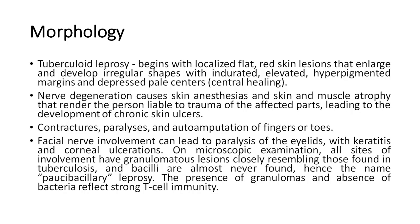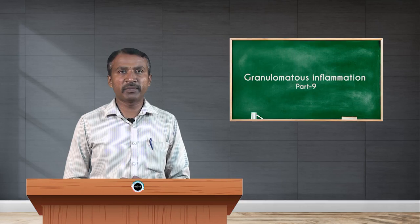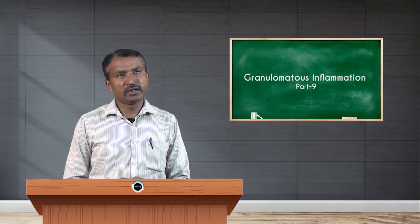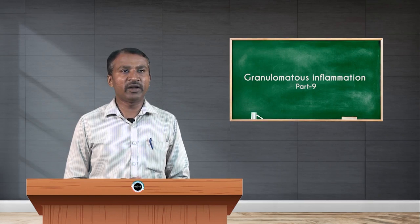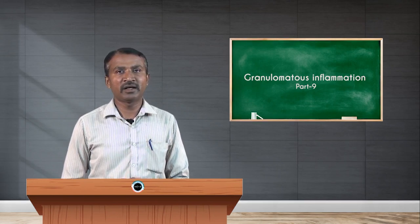Tuberculoid leprosy begins with localized flat red skin lesions that enlarge and develop irregular shapes with indurated elevated hyperpigmented margins and depressed pale centers — this is called central healing. Nerve degeneration causes skin anesthesia and skin and muscle atrophy, rendering the person liable to trauma of the affected parts, leading to the development of chronic skin ulcers.